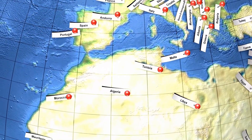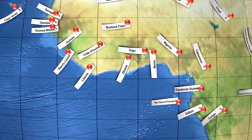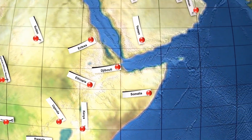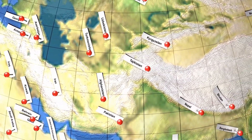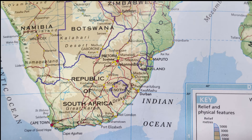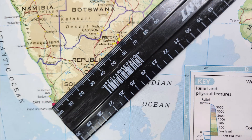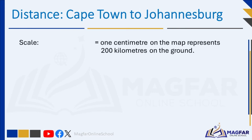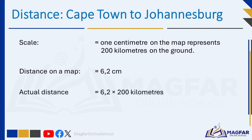A word scale uses a statement in words to describe the scale of the map. This is a written statement on the map that tells you the relationship between map distance and real-world distance. For example, it might say one centimeter on the map represents 200 kilometers on the ground. If we measure the distance on a map between Cape Town and Johannesburg, the measurement is 6.2 centimeters. We then multiply that measurement by 200 kilometers to calculate the real distance — so 1,240 kilometers will be the actual distance between Cape Town and Johannesburg.